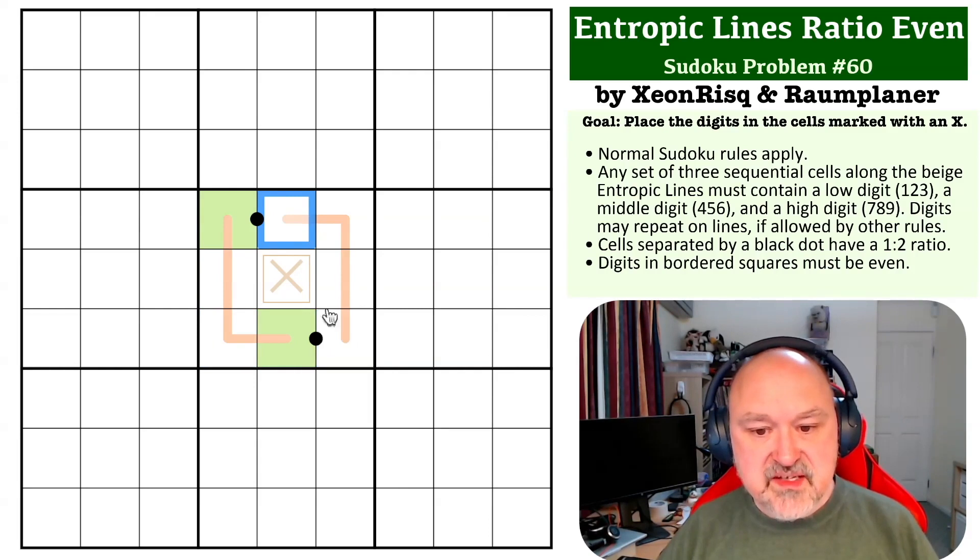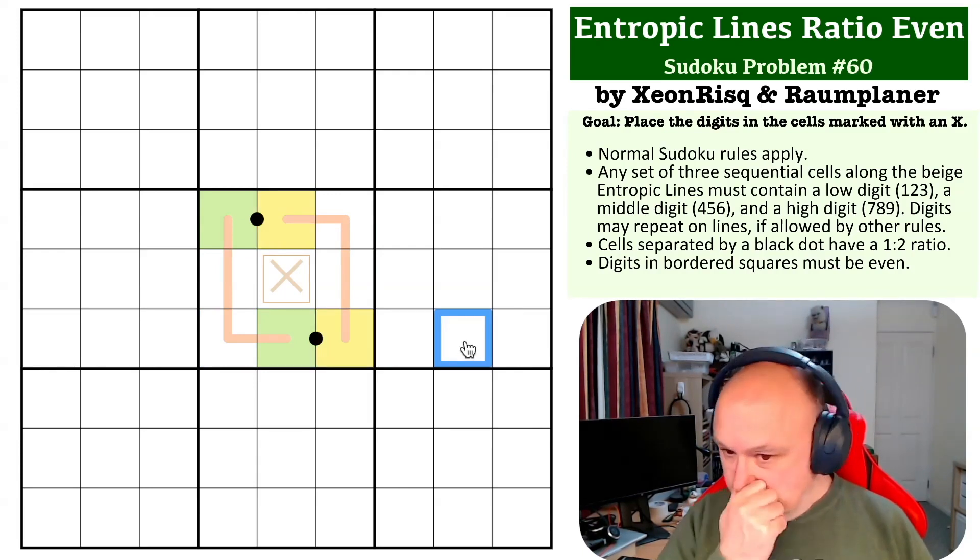Now this is the same. These are three cells apart. So one, two, three. So these need to be the same. Don't know what they are, but they need to be the same.